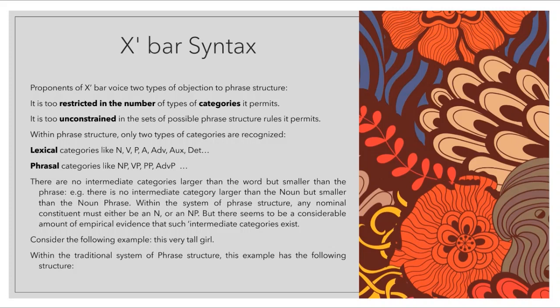Proponents of X-bar raise two types of objection to phrase structure. The first objection is that it is too restricted in the number of types of categories it permits. The second objection is that it is too unconstrained in the sets of possible phrase structure rules it permits. Within phrase structure, only two types of categories are recognized: lexical categories and phrasal categories. An NP consists of an N, a VP consists of a V, a PP consists of a P, and so on.